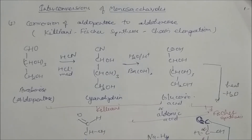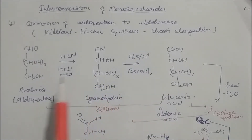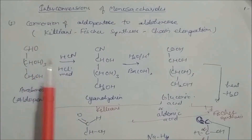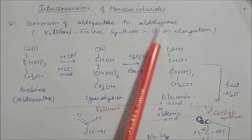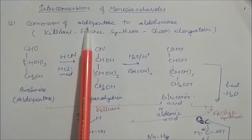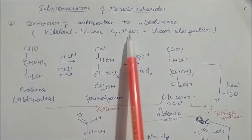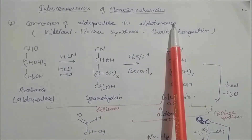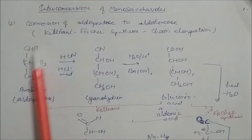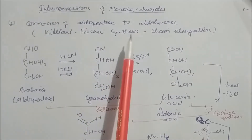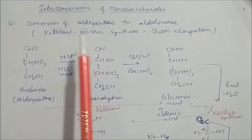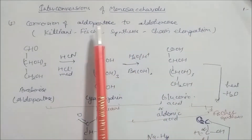In this lesson we will learn interconversions of monosaccharides — converting one saccharide into another. The first example is the conversion of aldopentose to aldohexose: an aldehydic pentose sugar is converted into an aldehydic hexose sugar with six carbon atoms. This process is called Kiliani-Fischer synthesis, also known as chain elongation, because we are increasing the carbon count from five to six.